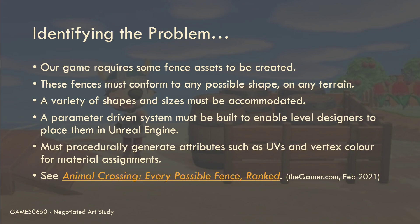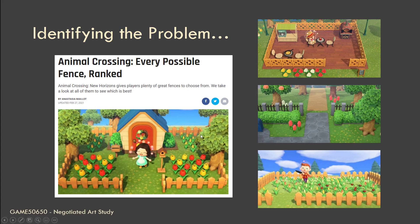I found an absolutely amazing article during my research called 'Animal Crossing Every Possible Fence Ranked' — it's an outstanding article. Someone has gone through Animal Crossing, looked at all the different fences, and given them a tier ranking based on how they look, how aesthetic they are, and whether they obscure your view. Animal Crossing has some interesting fences with tons of variety. We're going to keep it simple and build a procedural version of a simple wood fence, but once the system is built, it becomes trivial to swap out geometry assets to create other styles.